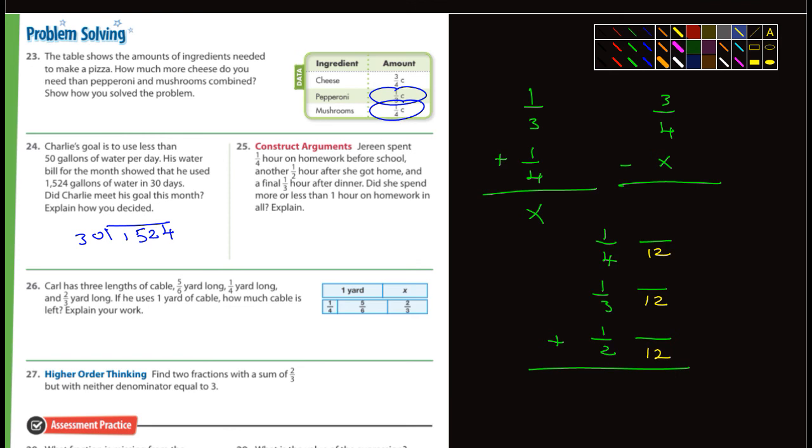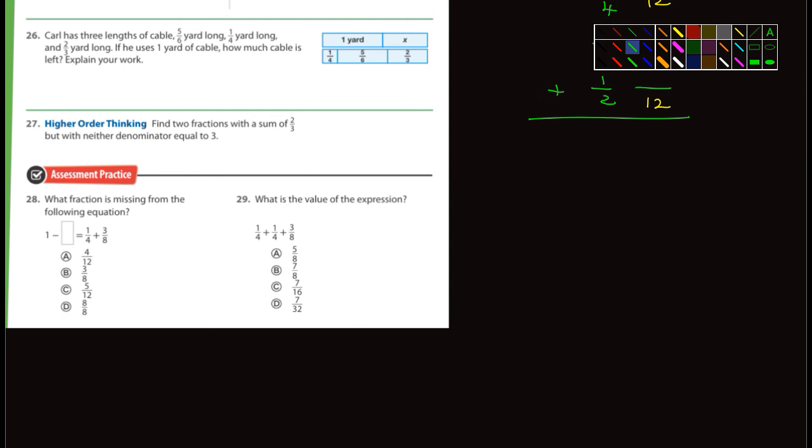Number 26, what do we got here? Carl has three lengths of cable, five sixths, one quarter yard, and two thirds of a yard. If he uses one yard of cable, how much cable is left? Okay. So what do you have to do? You're going to have to add up all three of those. So one quarter, five sixths, and two thirds. You've got to add up all three of those first. And let's see. What's the common denominator? Well, six is the largest, so I'll look at that first, but four doesn't go into six evenly. So if I double six to 12, six goes into 12, four goes into 12 evenly, and three does also. So it looks like, again, the common denominator would be 12.